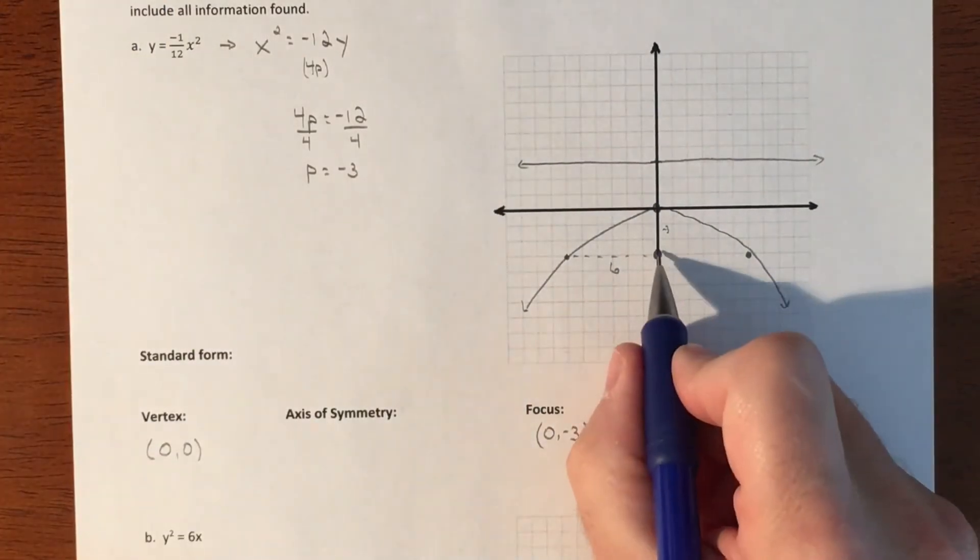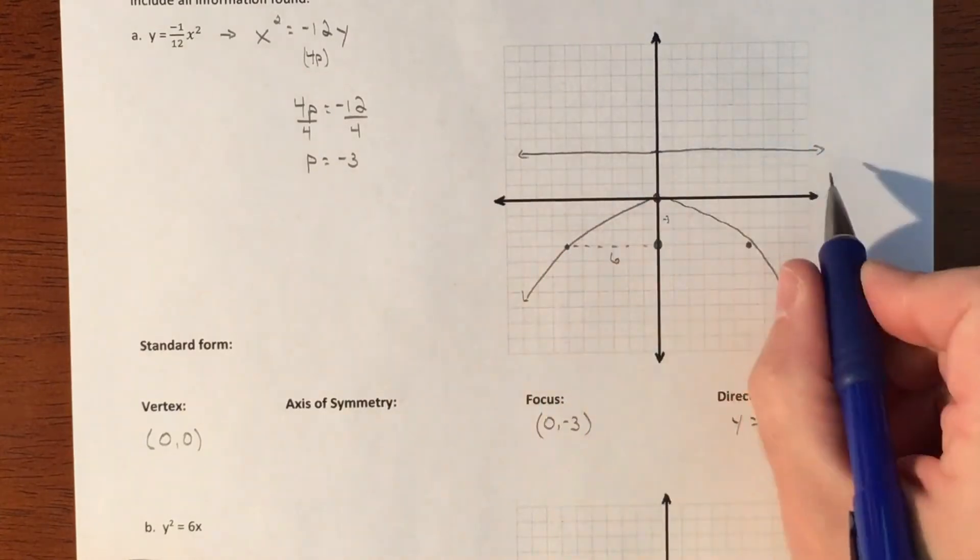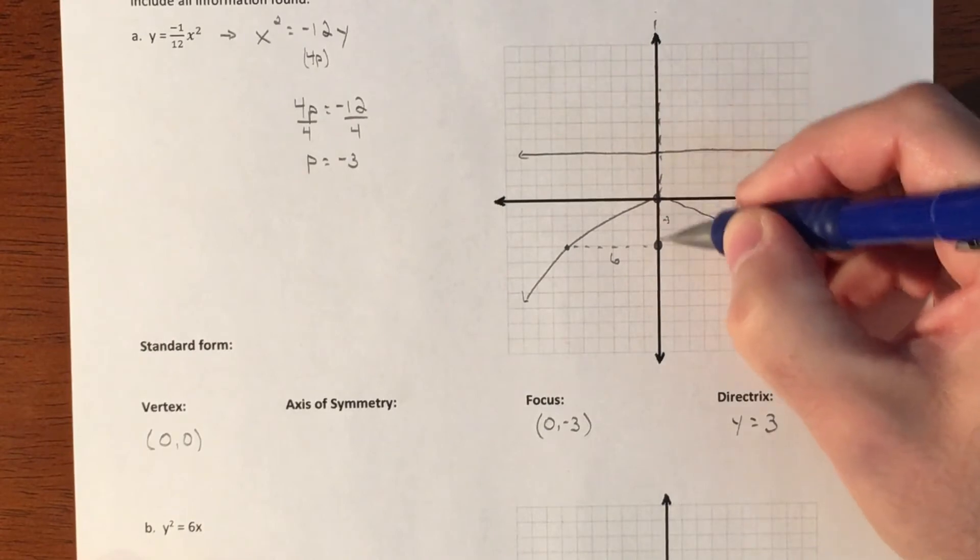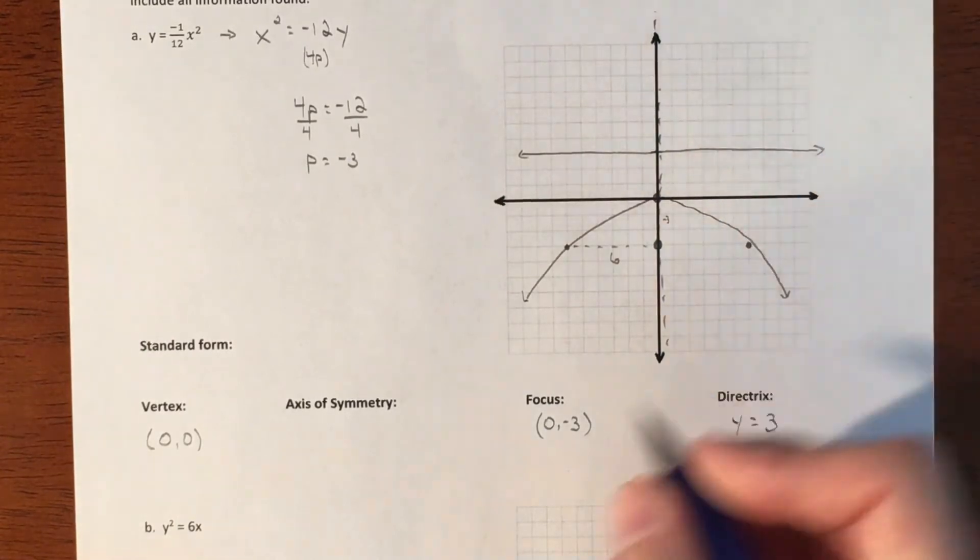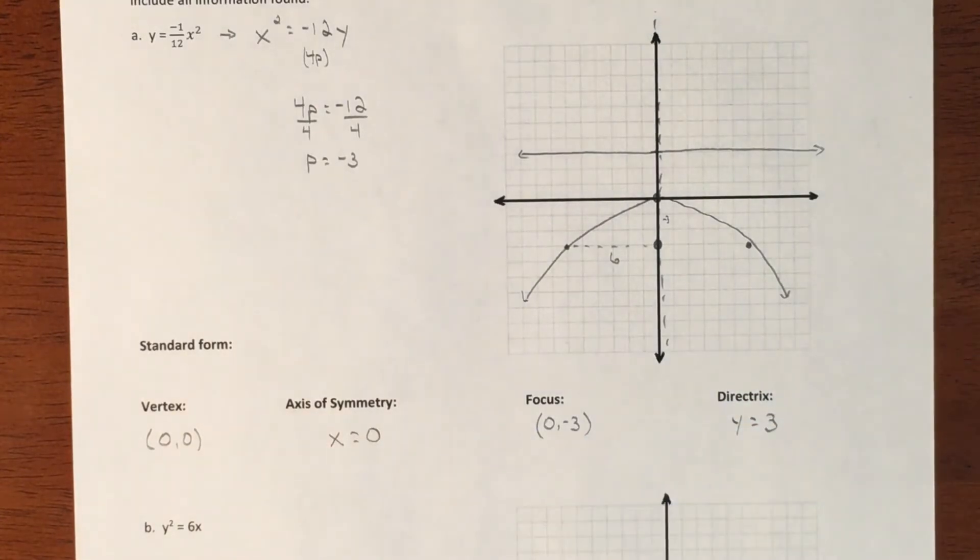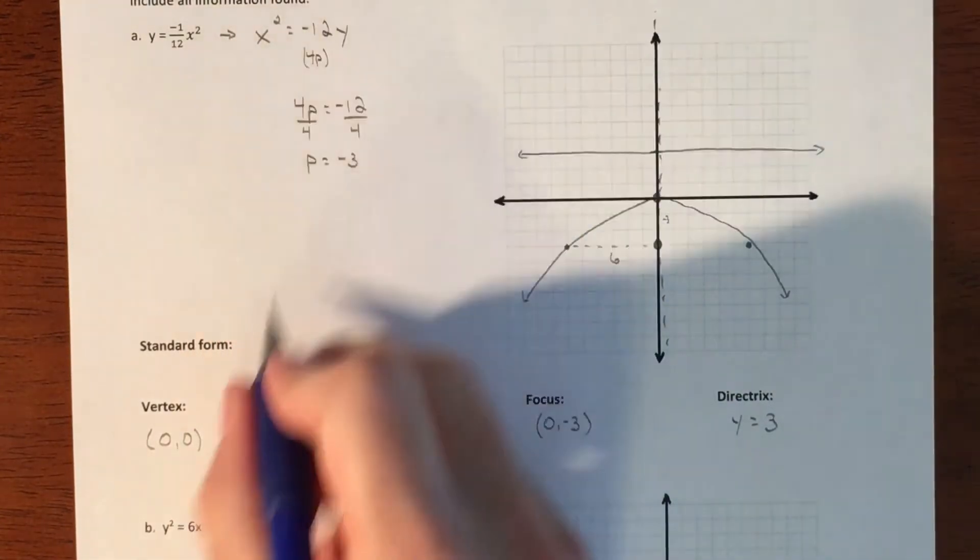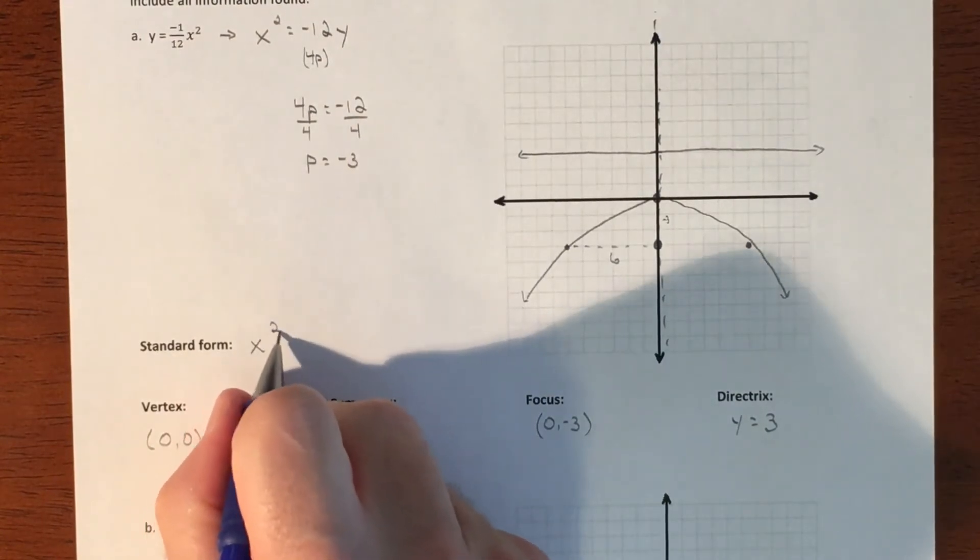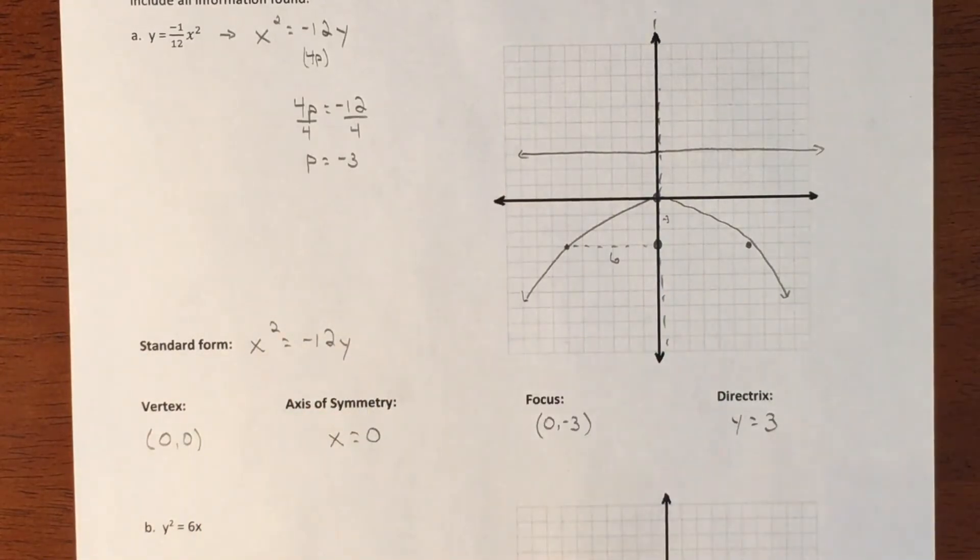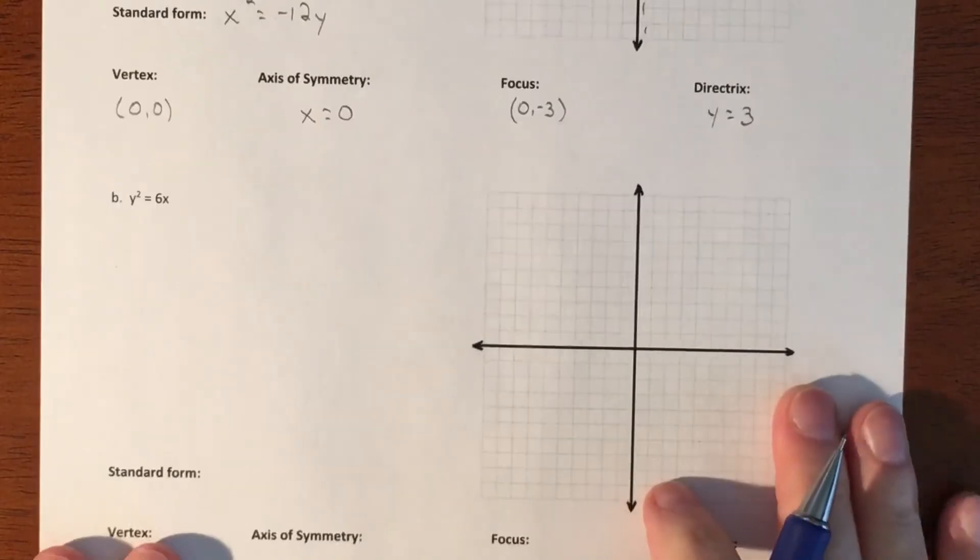And then we have our focal point, which is at (0, -3). We have our directrix, which is y equals 3. Our axis of symmetry just cuts right down the line here. So that's just an x equals 0. Okay. So our standard form for the equation is kind of what we manipulated here. It's x squared equals negative 12y. All right. So that gives us everything we need. So that was our first graph. And then we'll do one more.